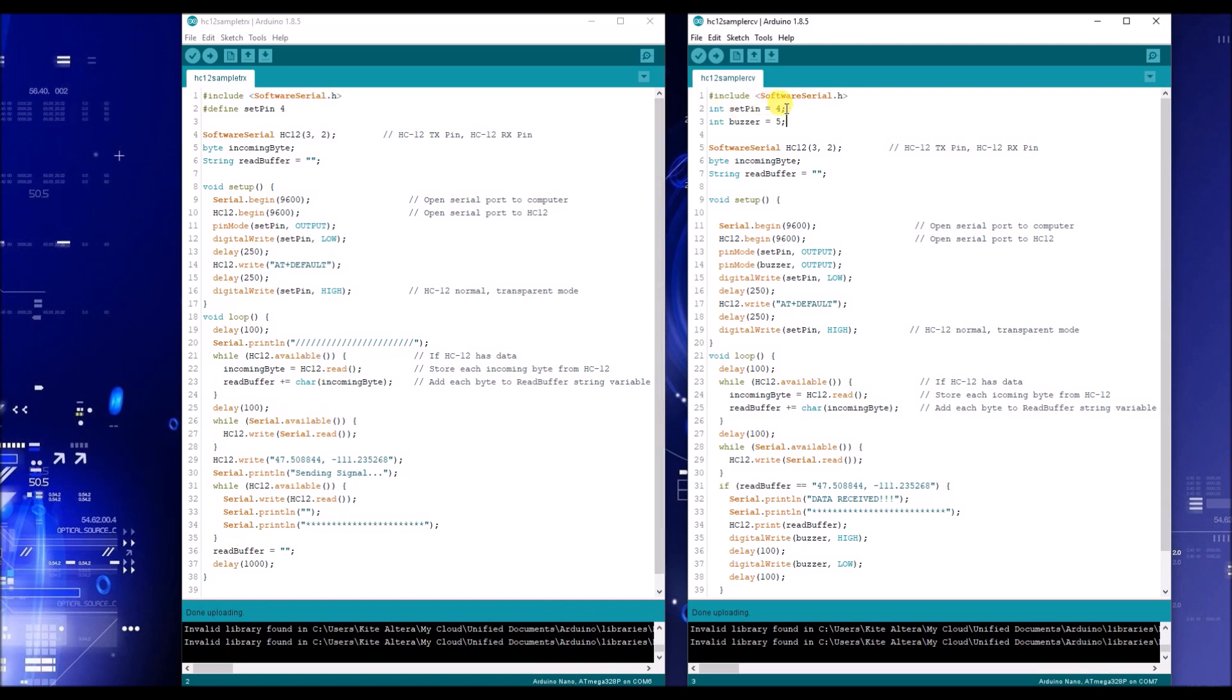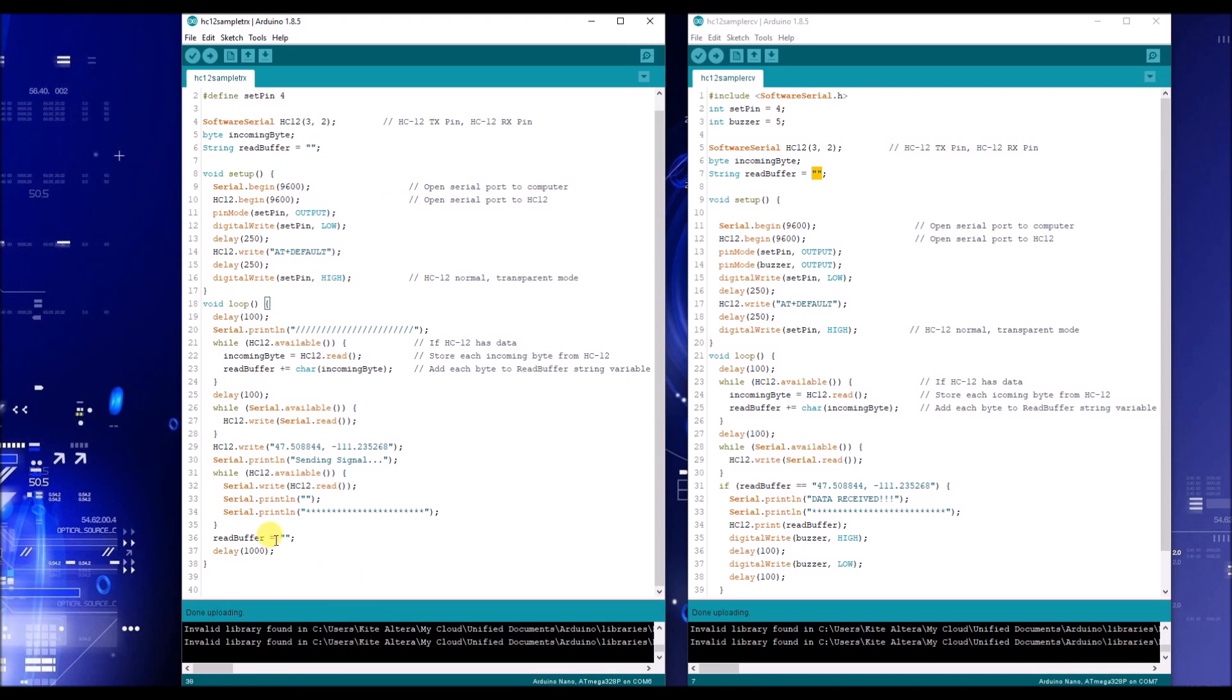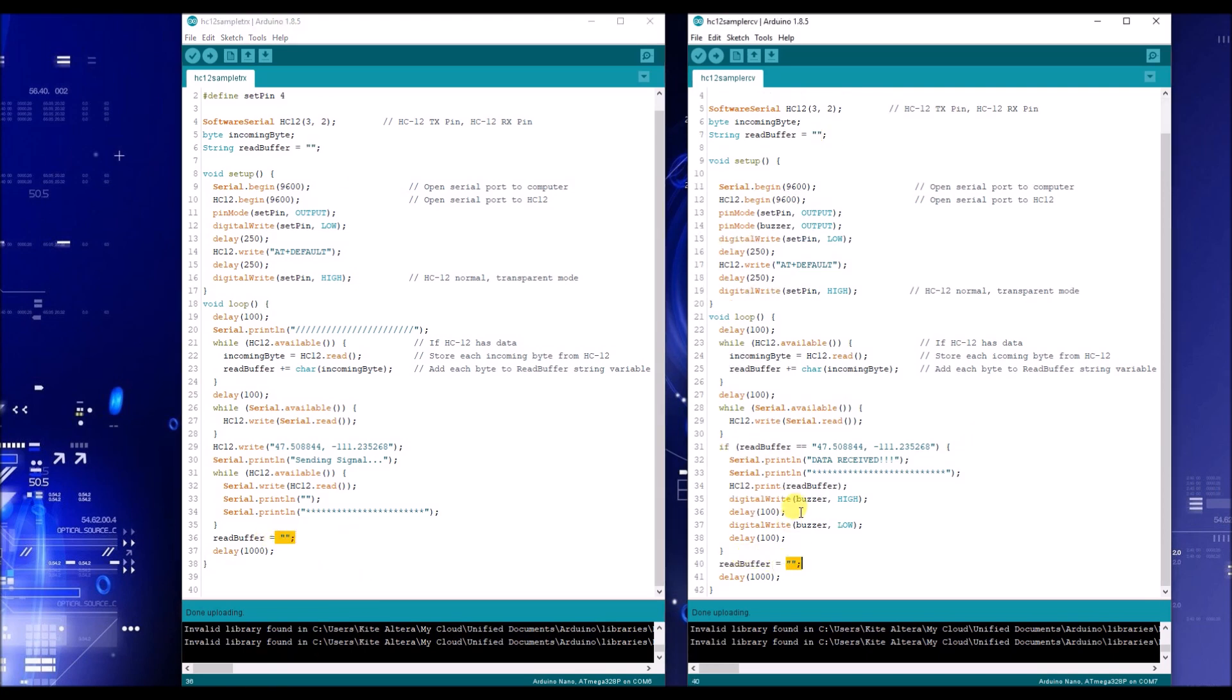Make sure you use the hashtag without a semicolon if you're using the define. And make sure you use the equal, then the pin, then a semicolon if you're using it for int. Next big thing you need to focus on is here, your software serial, HC12. It doesn't go receive transmit. It goes transmit first, then receive going from left to right. Next is your string read buffer equals this. This actually clears your buffer, which is why if you check here at the bottom, I have it as well.